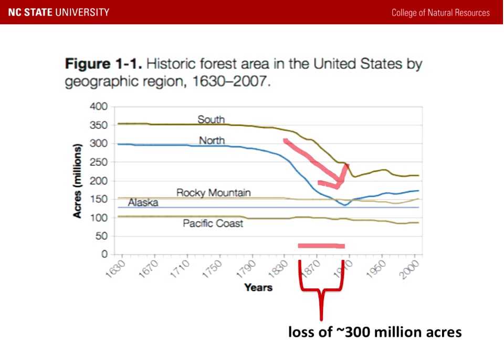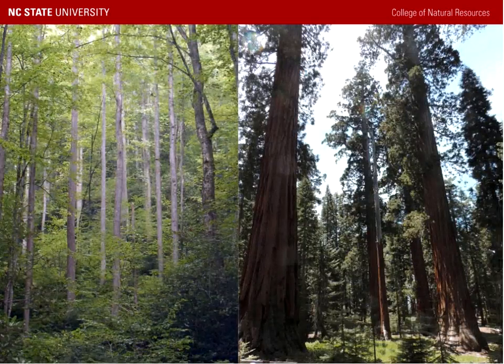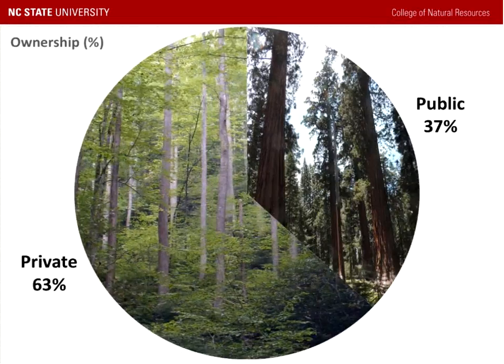Following the early 1900s, as we moved into 2000, forest cover across the United States has been relatively stable. By 2010 we had approximately 751 million acres of forest land in the United States. So who owns all this forest? It brings up a good question, because forest is very diverse across the United States, and with that diverse forest cover we also have a diverse ownership. Let's explore who owns America's forests.